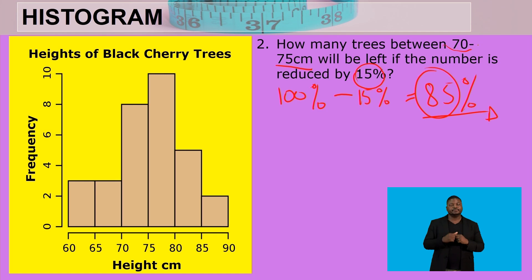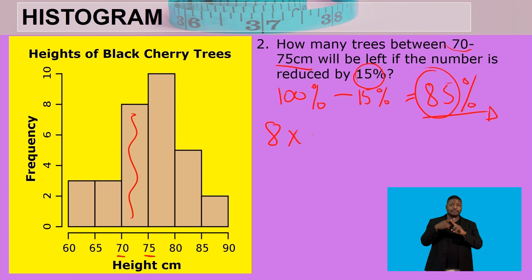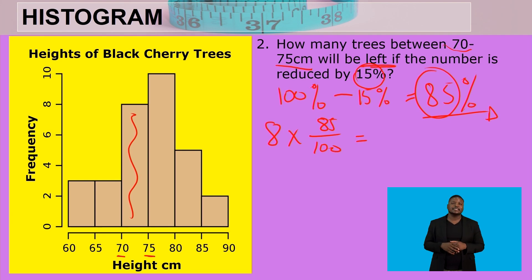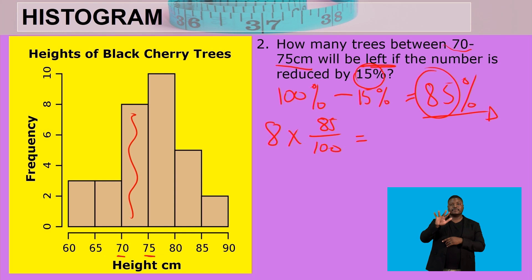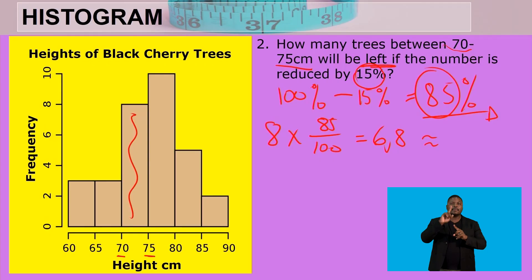Looking at the histogram, the bar for 70 to 75 centimeters shows 8 trees. We calculate 8 multiplied by 85 over 100, which gives us 6.8. Since we cannot have 6.8 trees, we round down to 6. So 6 trees will remain after the reduction.